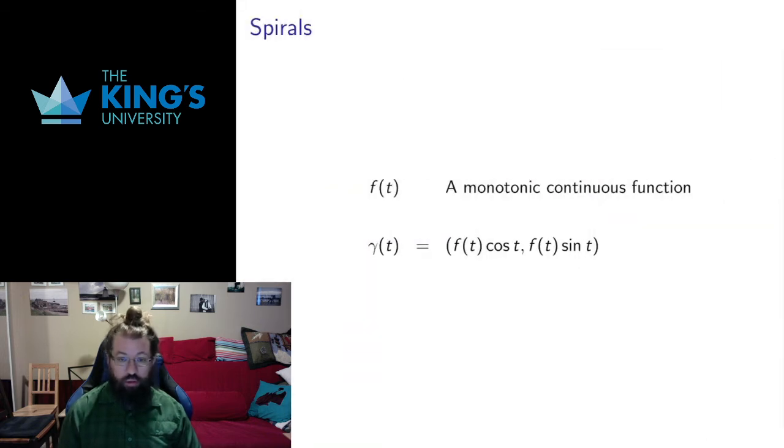I want to talk about a special class of parametric curves called spirals. So they look like the circle, I have cosine and sine here, but they have the same function in both coordinates in the x and the y-coordinate, which is some monotonic continuous function, either increasing or decreasing, and that's essentially going to change the radius.